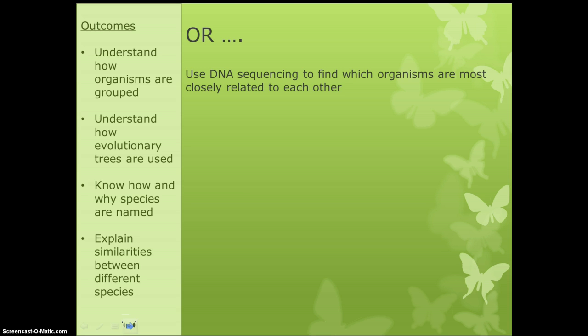Most of the traditional classification I've described is a bit outdated. The best approach is to look at DNA — by examining organisms' DNA we can see really clearly how closely related they are. You do need to know about DNA sequencing, but unfortunately you also have to know about all the classification content as well.